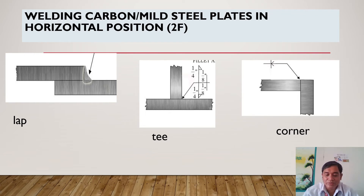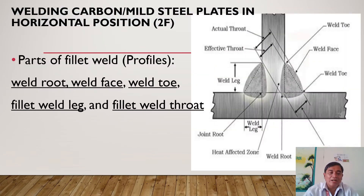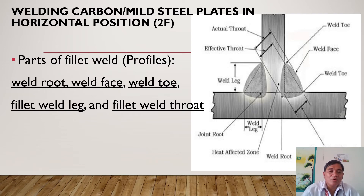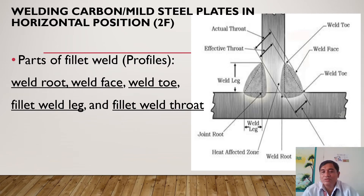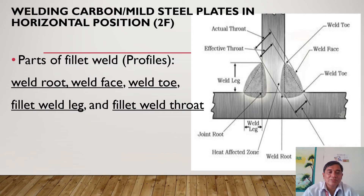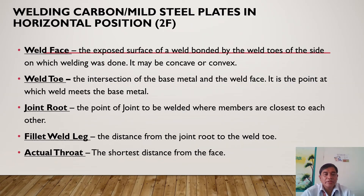Notice that no edge preparation is needed. Now, the fillet weld profile has five main parts: the weld root, the weld face, the weld toe, the fillet weld leg, and the fillet weld throat. In the drawing, you can see these profiles labeled.